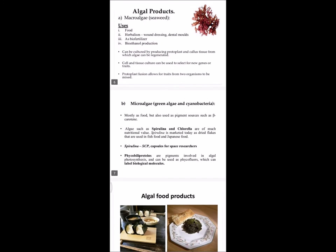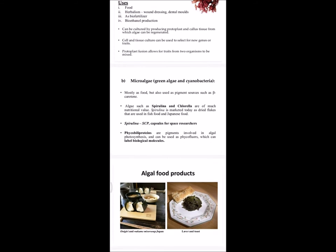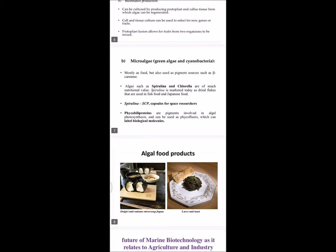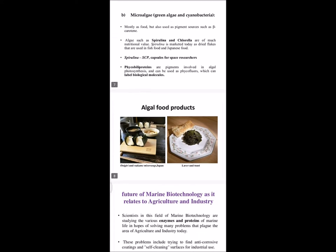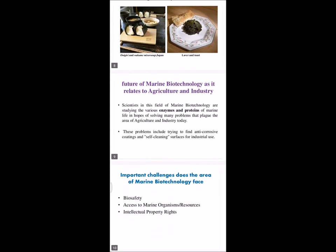The second type is micro algae. Green algae and cyanobacteria are examples of micro algae. They are used as food or as pigment sources such as beta-carotene. Algae like spirulina and chlorella have high nutritive value and are used in fish food and in Japanese food. Two pictures of algal food products are shown here.